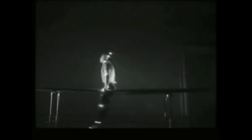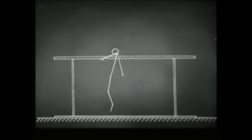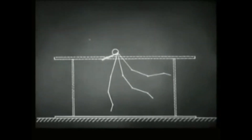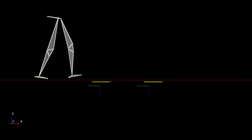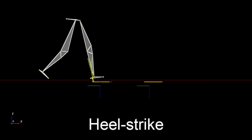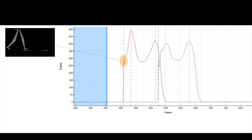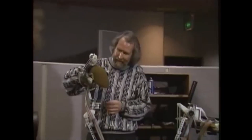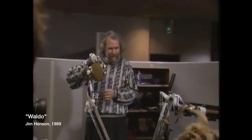Motion capture began as a photogrammetric tool in the study of athletic movement. Subjects would wear a suit with markers on their joints capable of sending signals that could be extrapolated and mapped out as data by computer. The data could then be used for scientific or medical purposes, as well as for entertainment.